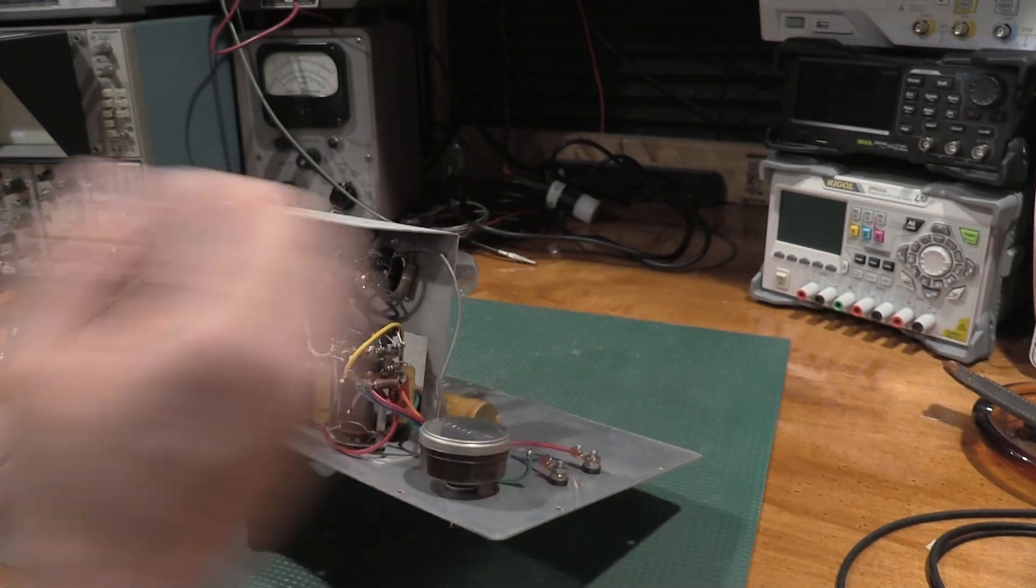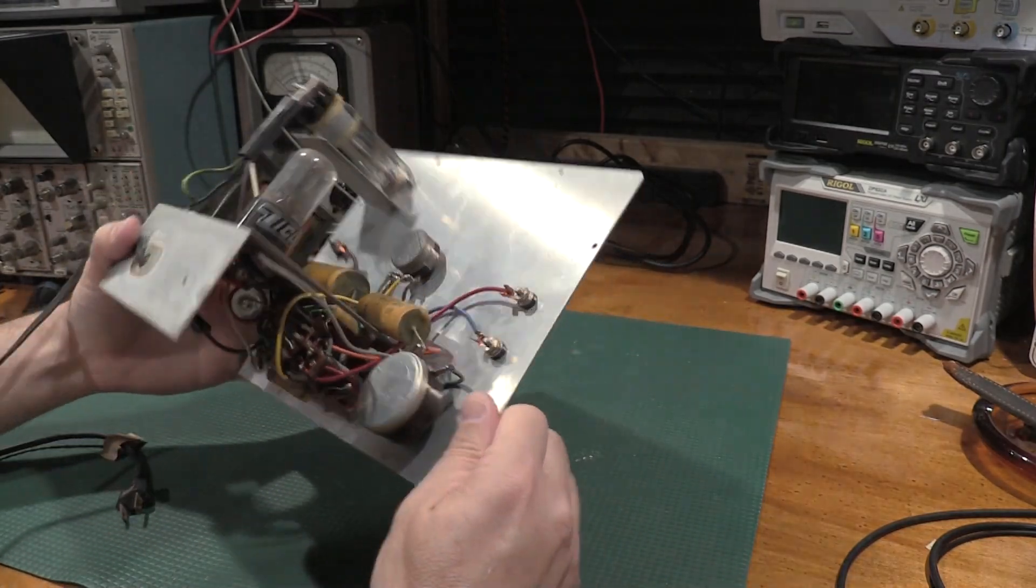It does look like we have a capacitor across the AC line, or the AC line to chassis ground. So that's going to get replaced. This is on one side of the switch to ground. So that'll get swapped out to an XY cap. This one's probably just going to need a recap.